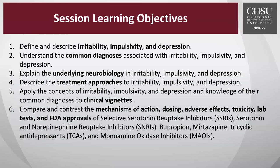In terms of our learning objectives today, we're going to start with some definitions — defining and describing irritability, impulsivity, and depression — and the common diagnoses associated with those symptoms or behaviors. We'll look at the underlying neurobiology in irritability, impulsivity, and depression, followed by specific treatment approaches. Finally, we'll apply the concepts to clinical vignettes, comparing and contrasting mechanisms of action, dosing, adverse effects, toxicity, lab tests, and FDA approvals as they relate to these diagnoses and the medications used to treat them.